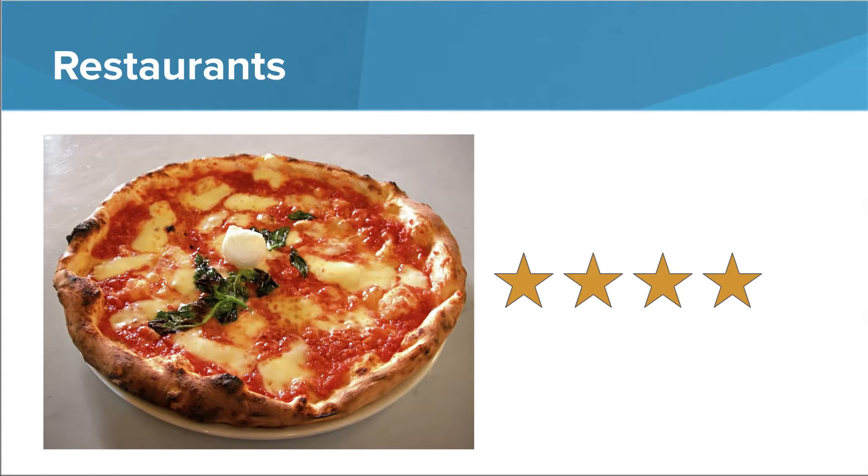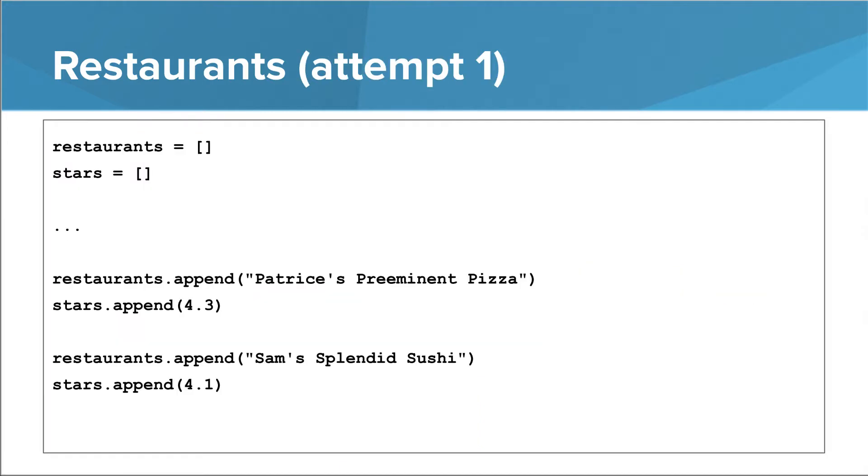Let's try to do that with the data structure knowledge that we currently have. We might store this information in a pair of lists. One list would hold the restaurant names, and the other list would hold the number of stars each restaurant has. Whenever we append a restaurant, we also append its number of stars. We must make sure that if a restaurant is at a particular index in restaurants, its number of stars is at the same index in stars.